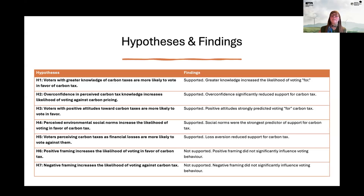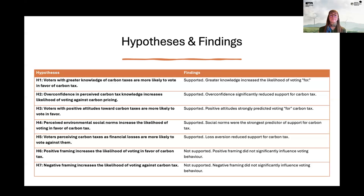I had seven hypotheses — five worked and two didn't. Participants with greater knowledge and positive attitudes toward carbon tax were more likely to vote for it. If participants' friends and family — social norms — had positive environmental attitudes, they were also more likely to support carbon pricing. If they were overconfident about their knowledge compared to their actual knowledge, they were less likely to support carbon tax. And if they perceived carbon tax as a loss rather than a gain, they were also more against carbon pricing.